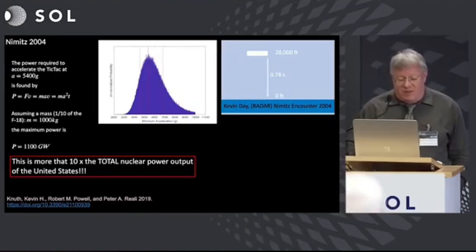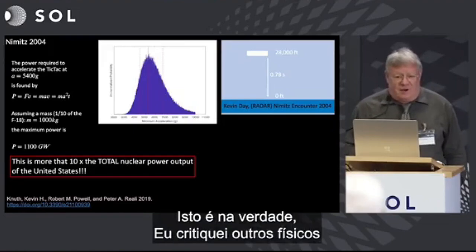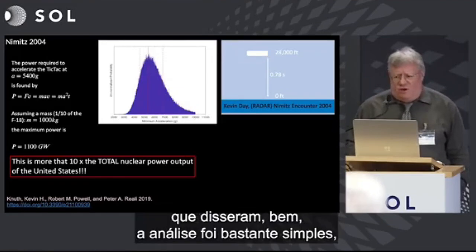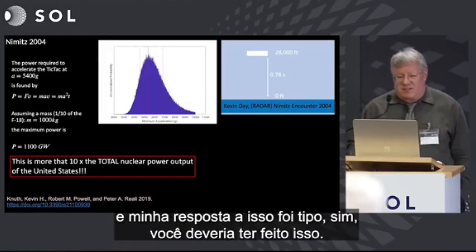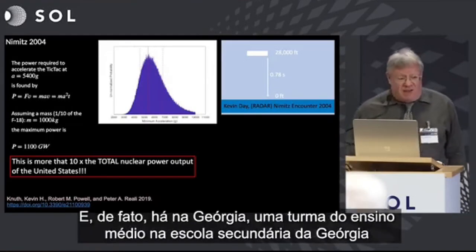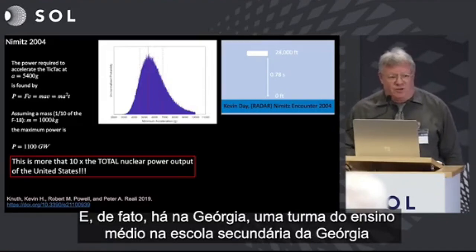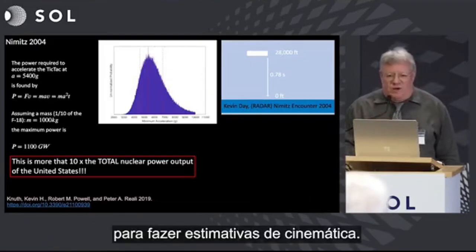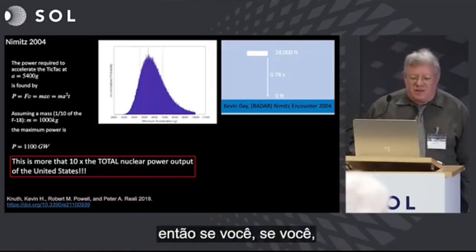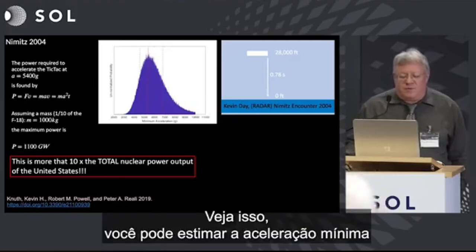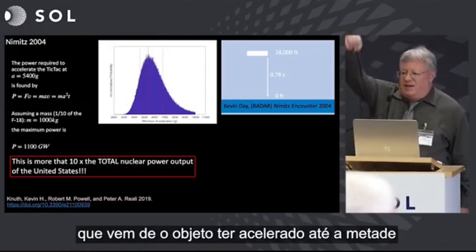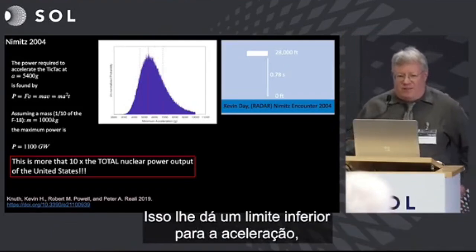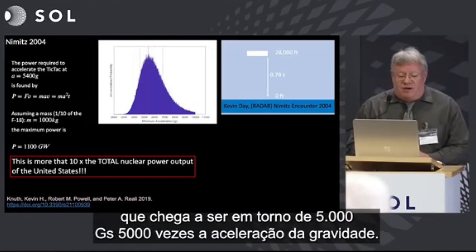How anomalous? Do the math. The analysis was actually rather simple — I've criticized other physicists for not doing it; your students could have done it. In fact, a high school physics class in Georgia used this paper as an example of how to make estimates of kinematics. If you look at this, you can estimate the minimum acceleration — the object would have accelerated halfway and then decelerated the other half. That gives a lower bound of around 5,000 g's — 5,000 times the acceleration of gravity.